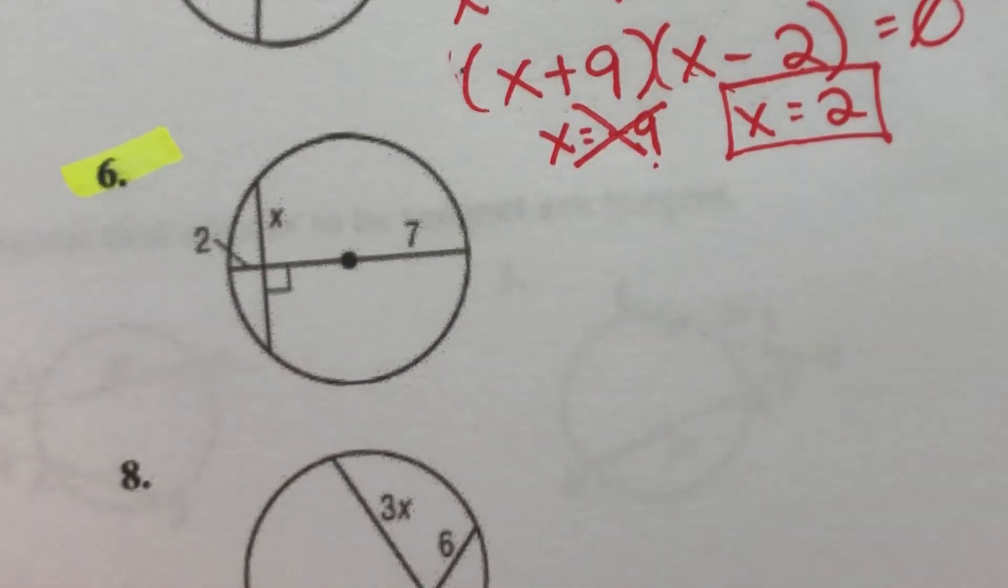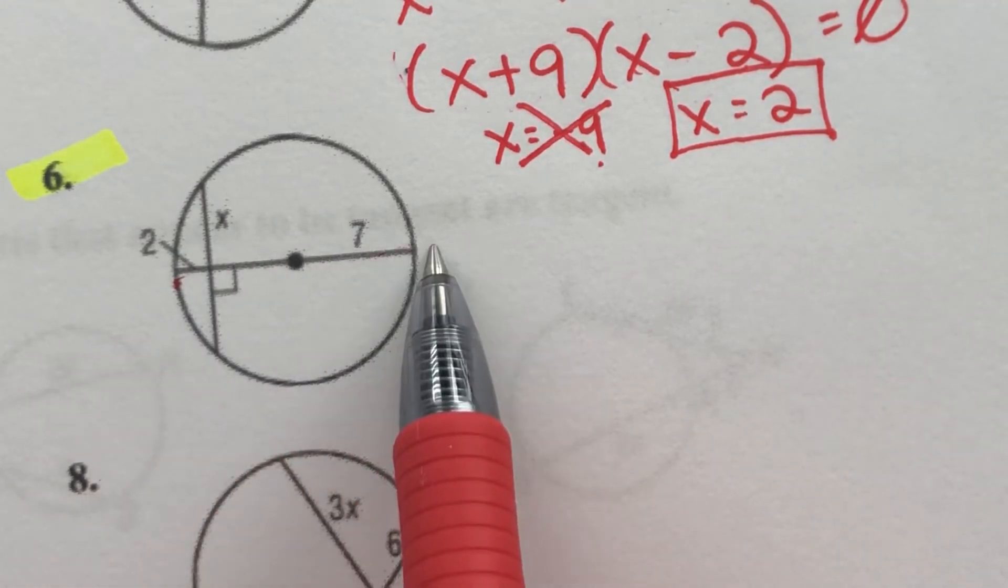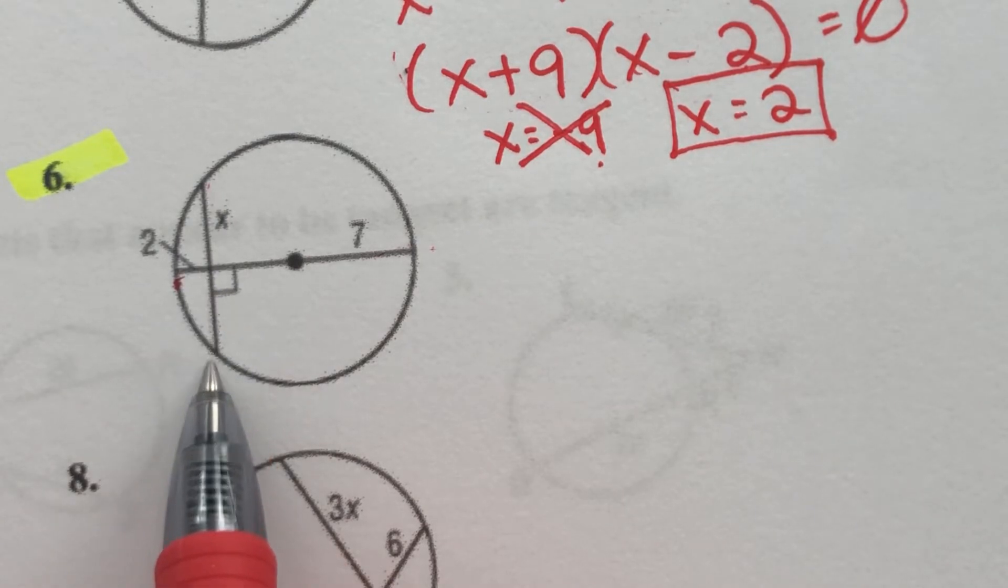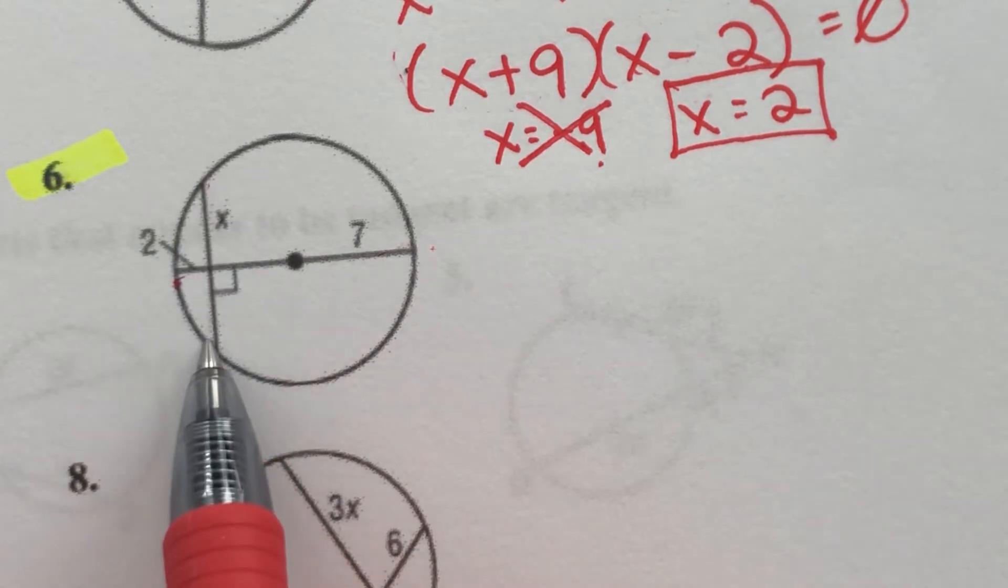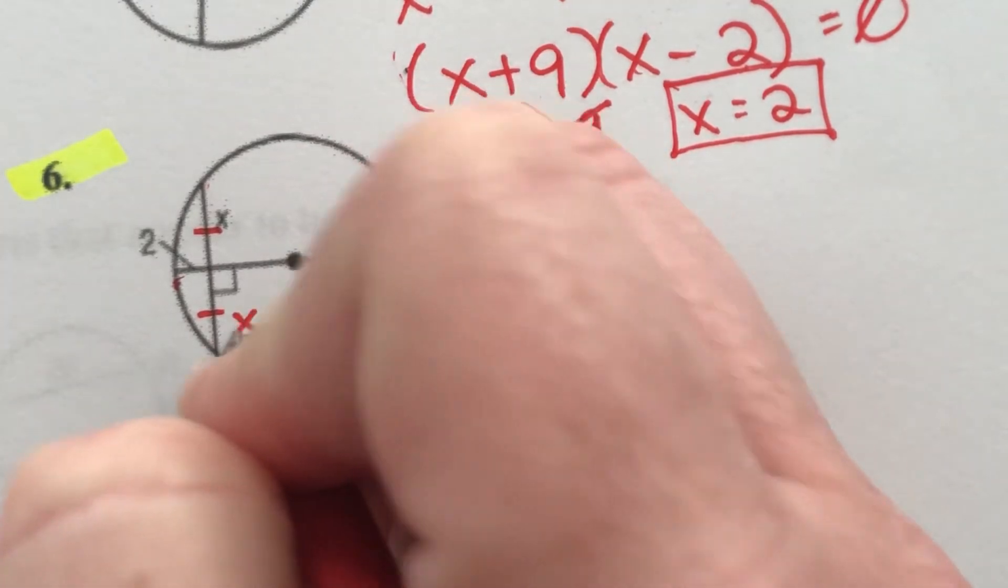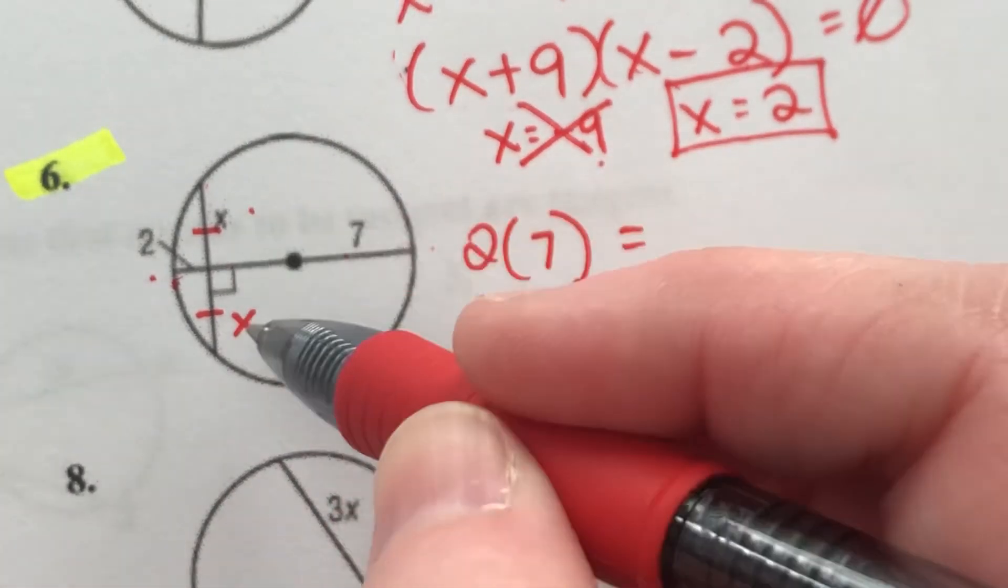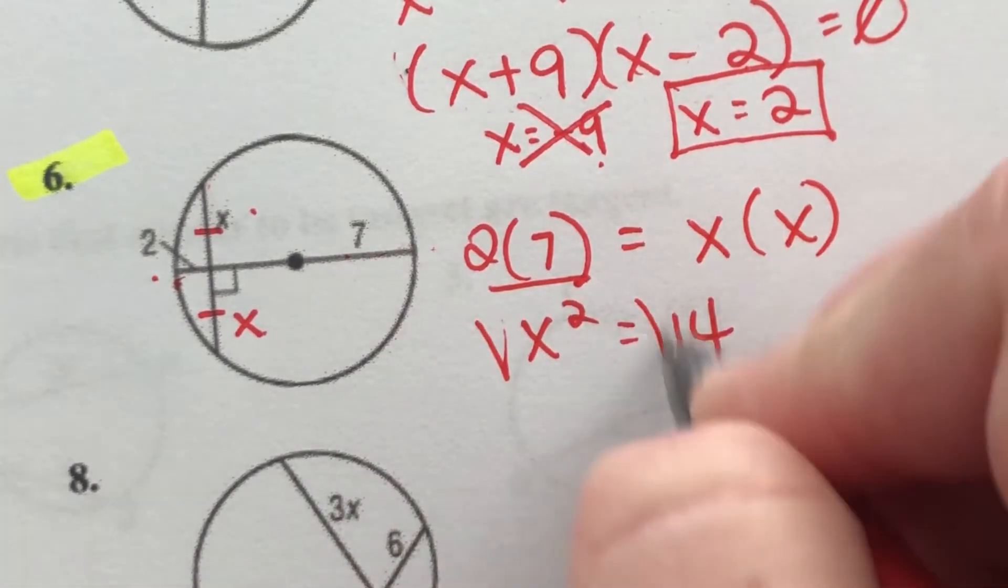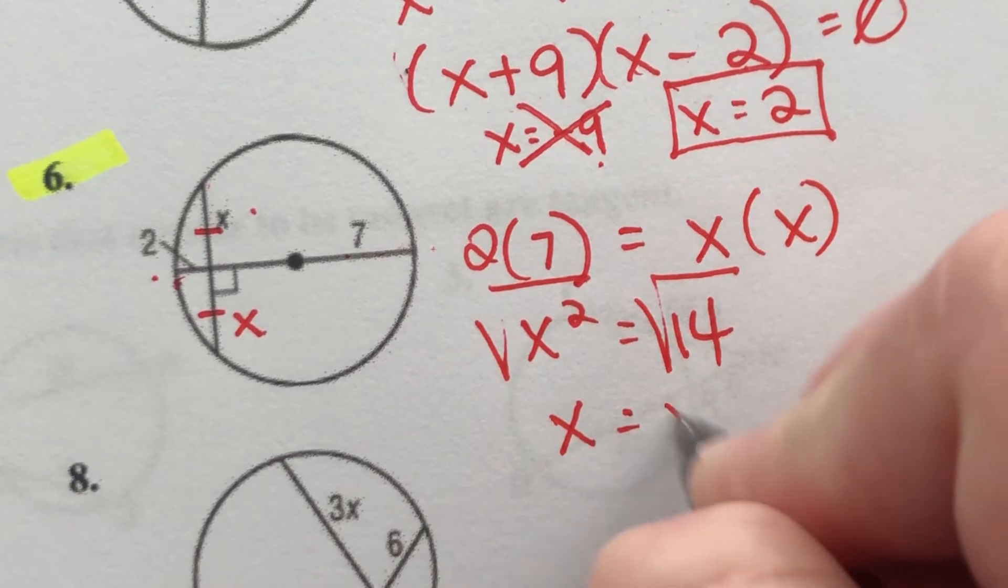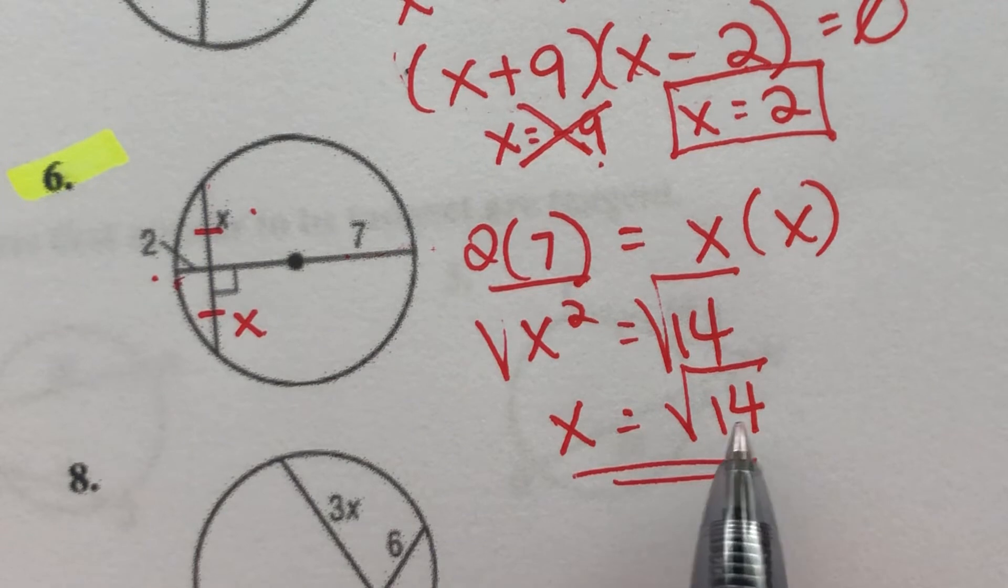Number 6, this is going to be another radical sign problem. We've got a line here, the diameter of the circle, which is perpendicular to a chord. And remember, previously we said if these are perpendicular, then this line is cutting this chord in half. So this side is equal to this side is equal to this side, which means this is X. So 2 times 7 has to be equal to X times X. So X squared equals 14. Take the square root of both sides, and X equals the square root of 14. And the only thing I can do to simplify here is to change it to a decimal, which I don't want to do because I don't want to round anything. So I'm going to leave it in this form.